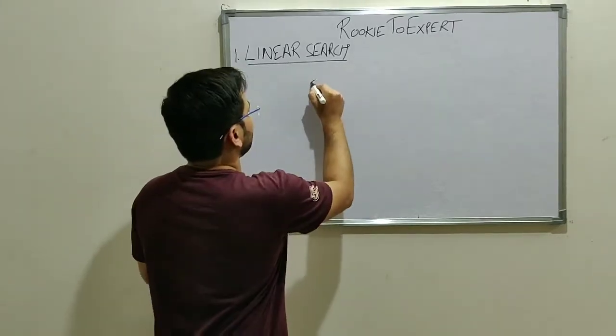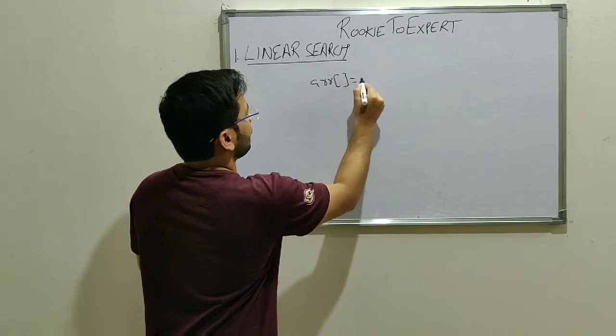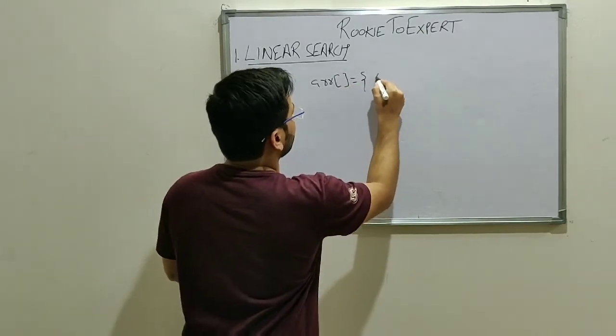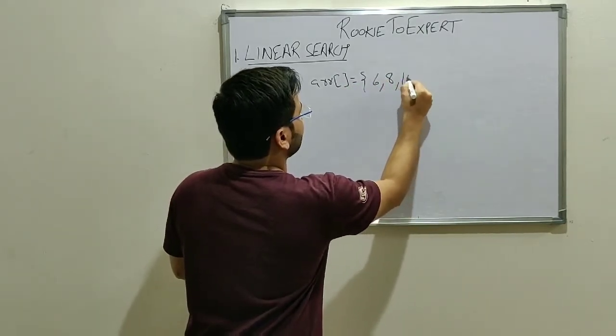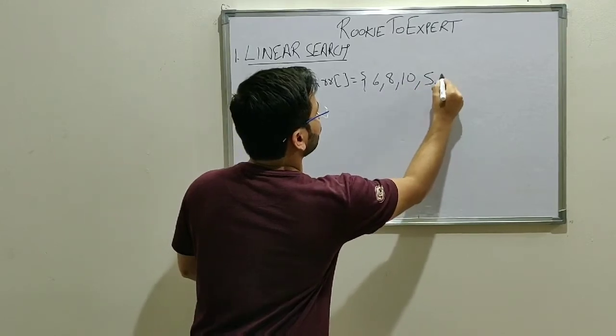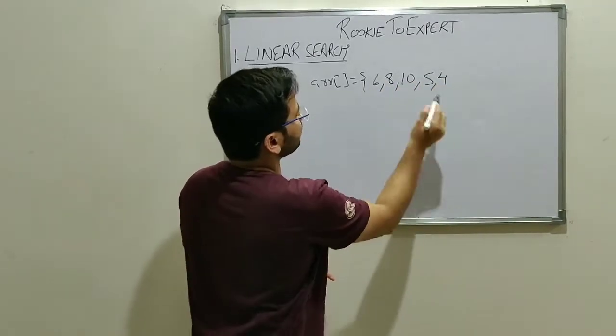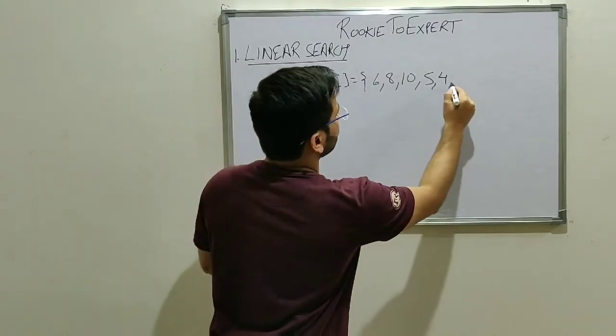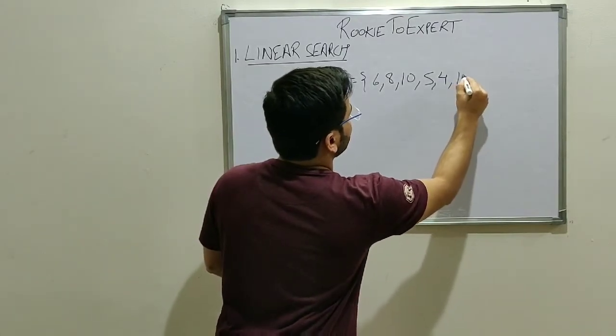For example, suppose we have one array, let's say it's 6, 8, 10, 5, 4. It doesn't matter if the array is sorted or not, so you can take anything. So let's say 100.